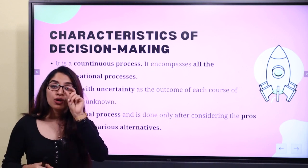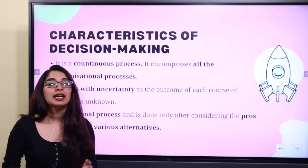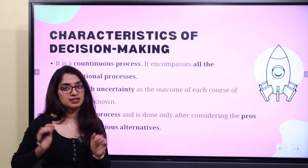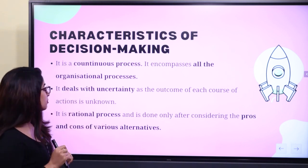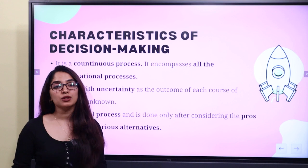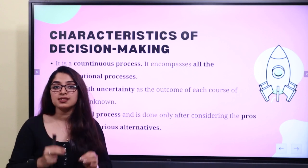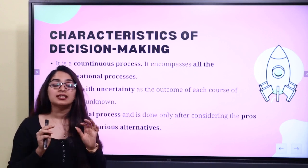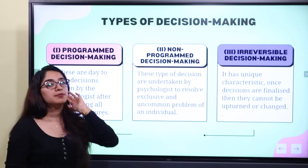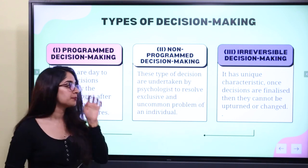Decision making is a rational process and is done only after considering the pros and cons of various alternatives. The alternatives — all the advantages and disadvantages — are considered before making a decision. It is a rational process.